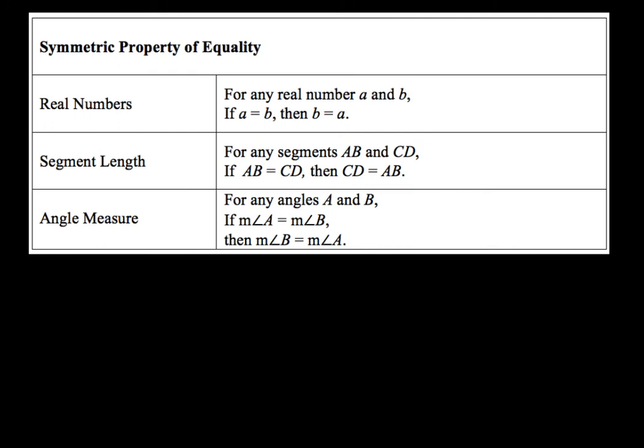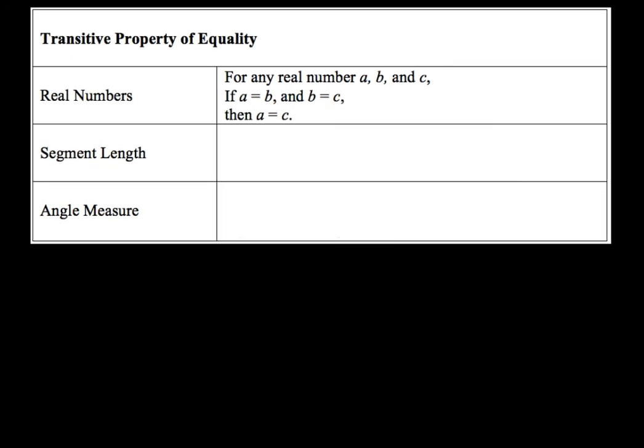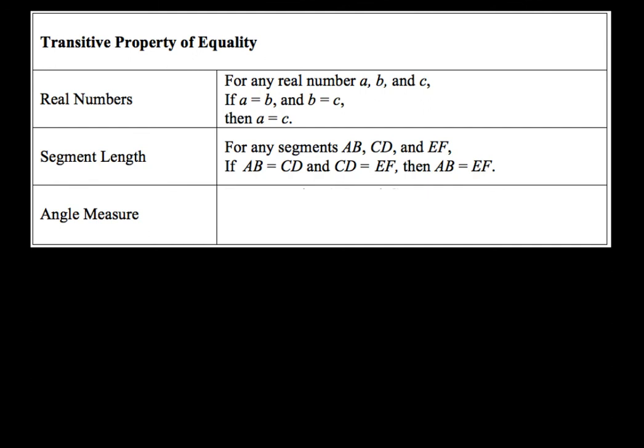Next we've got the transitive property of equality. For any real numbers A, B, and C: if A equals B and B equals C, then A equals C. The way I think about it is cutting out the middle man — if two things are both equal to the same thing, they're equal to each other. Likewise for segment lengths: if AB equals CD and CD equals EF, then AB is going to be equal to EF.